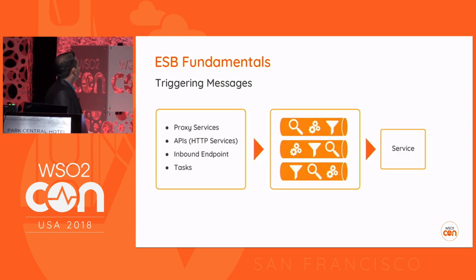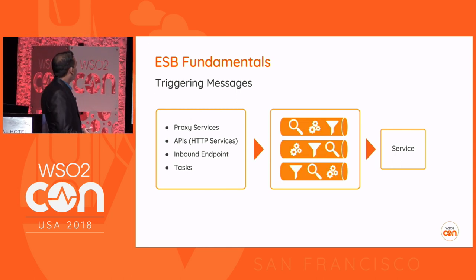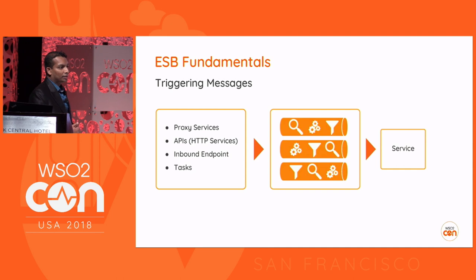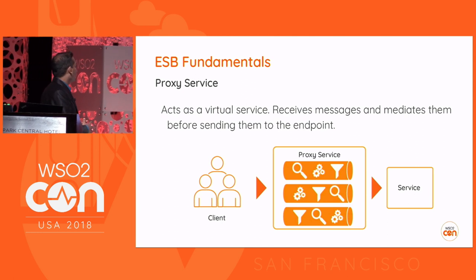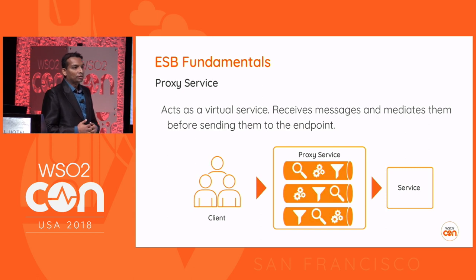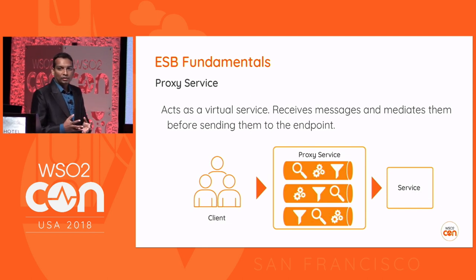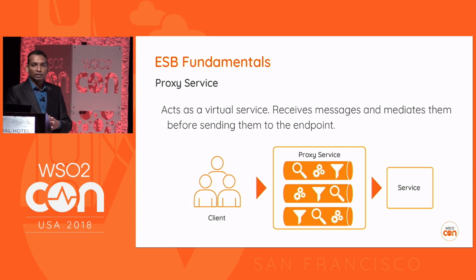Now let's see how we can get messages into the ESB engine. There are mainly four ways: proxy services, APIs, inbound endpoints, and tasks. A proxy service is a virtual service hosted in ESB. If you want to build some kind of integration scenario and do some mediation logic, you create a proxy service and put those different mediators in it — it is a virtual service available in the ESB runtime.